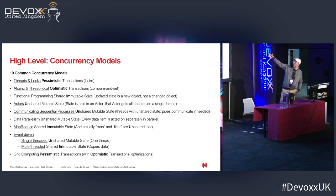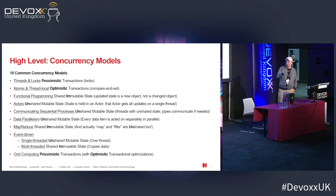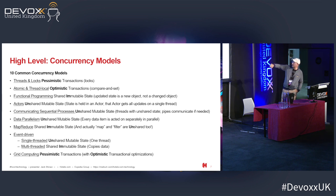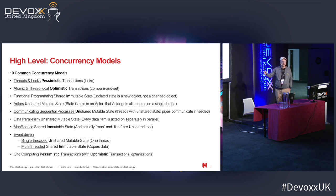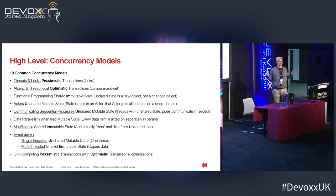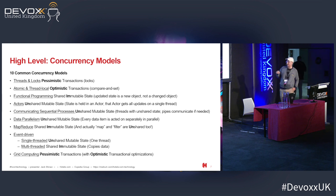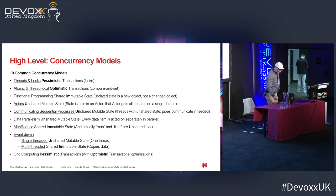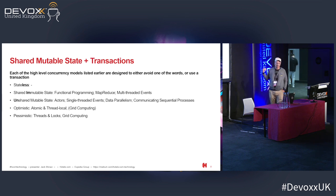MapReduce is kind of similar to the functional programming implemented in Java. The streams — it's actually MapFilterReduce, but it's called MapReduce. So those two are similar, and again it's still immutable — they're going for immutability. The last one is grid computing — think of Hazelcast or Apache Ignite. They are basically pessimistic, because when you distribute it, it's very difficult to do anything other than pessimistic. But they do have some optimistic optimizations. Each of these concurrency models is something you'd potentially use to avoid the problems of concurrency — and that's why there are so many.